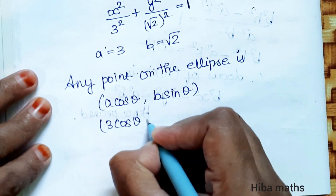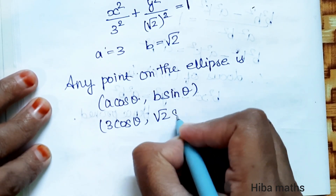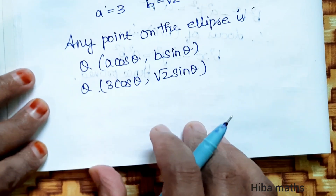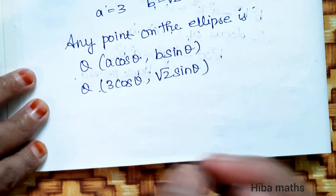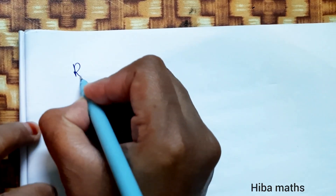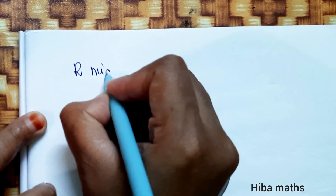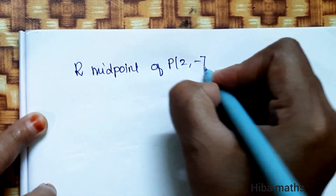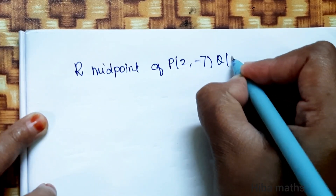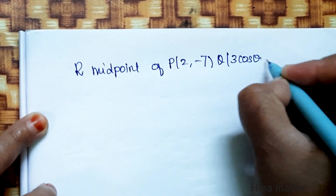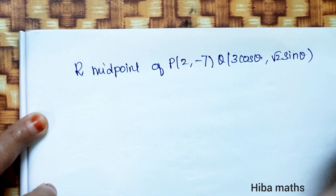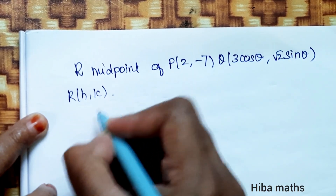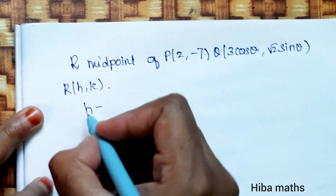So the point Q is (3 cos θ, √2 sin θ). Now, R is the midpoint of PQ. Let the midpoint R be (h, k). We apply the midpoint formula using P = (2, -7) and Q = (3 cos θ, √2 sin θ).